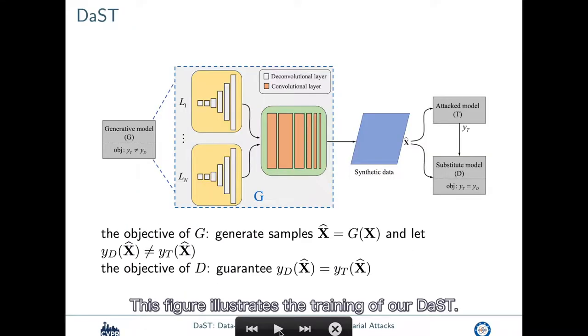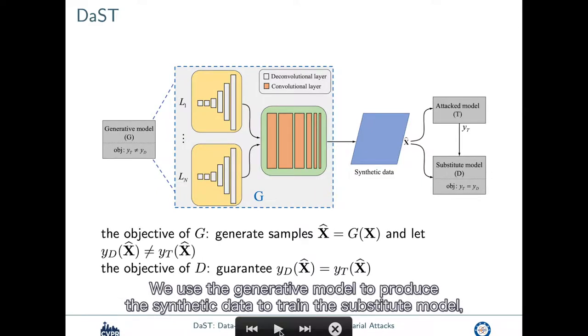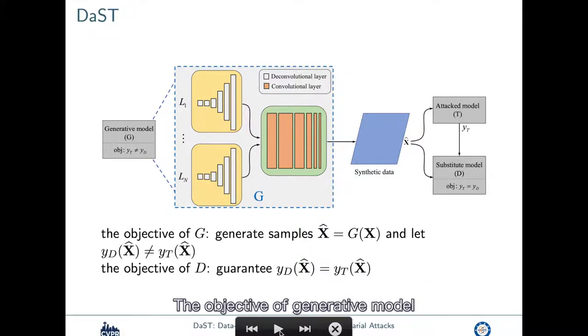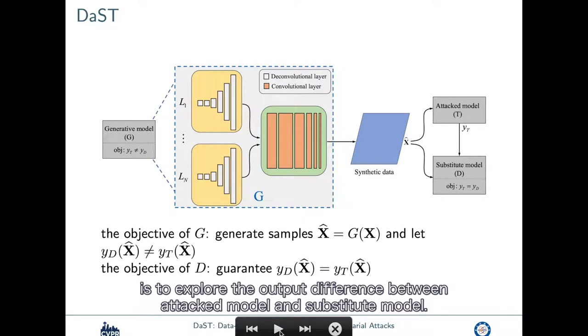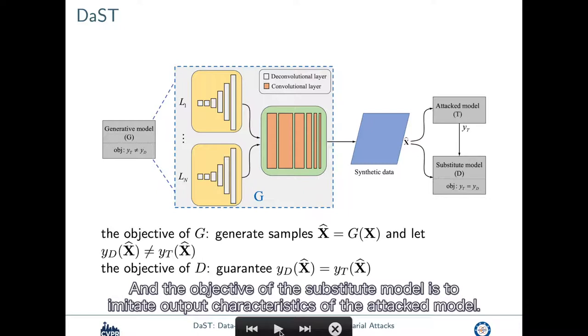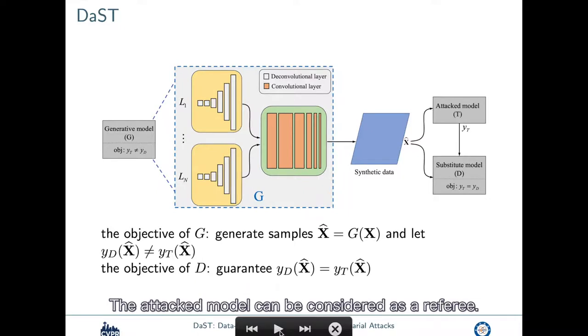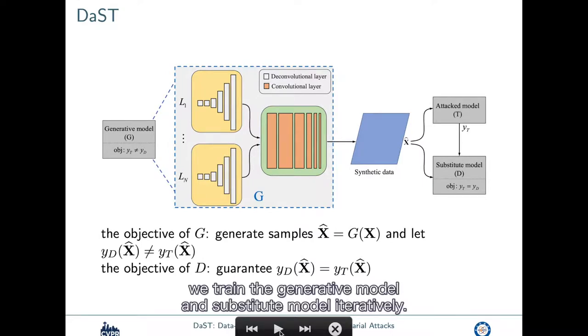This figure illustrates the training of our data. Inspired by the generative adversary networks, we use the generative model to produce the synthetic data to train the subsidial model. The objective of generative model is to explore the output difference between attack model and the subsidial model. And the objective of the subsidial model is to imitate output characteristics of the attacked model. The attack model can be considered as a referee. It's a special two-player game. In the training, like the game, we train the generative model and subsidial model iteratively.